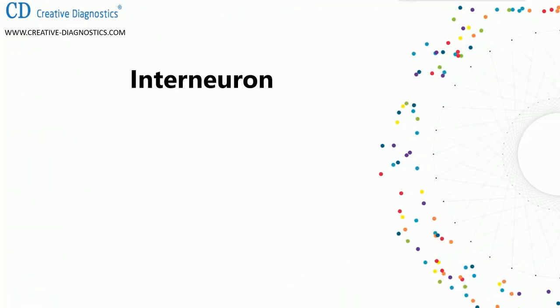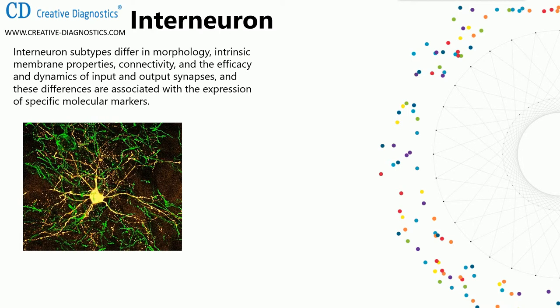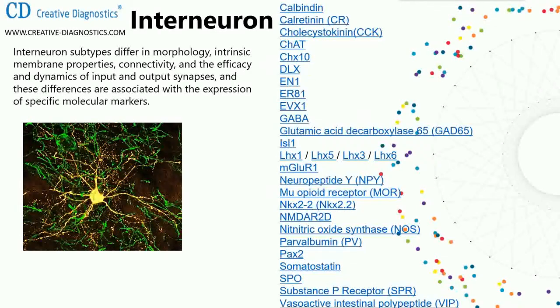Third: interneurons. Interneuron subtypes differ in morphology, intrinsic membrane properties, connectivity, and the efficacy and dynamics of input and output synapses, and these differences are associated with the expression of specific molecular markers.